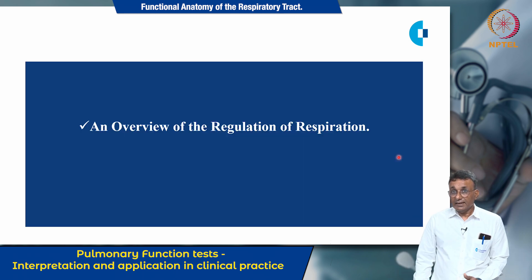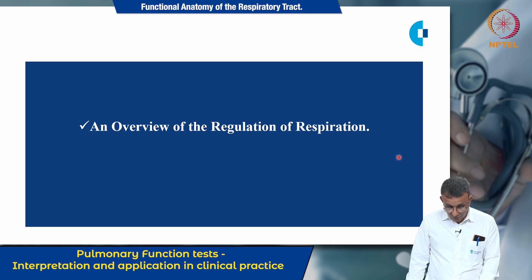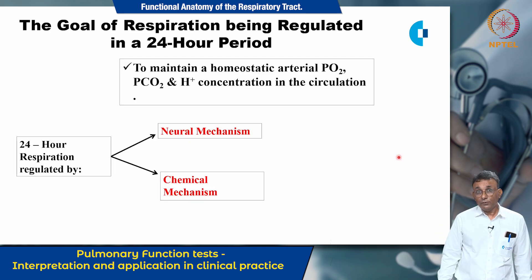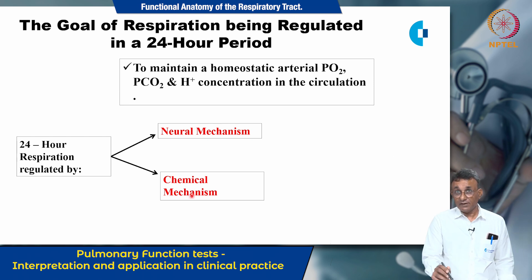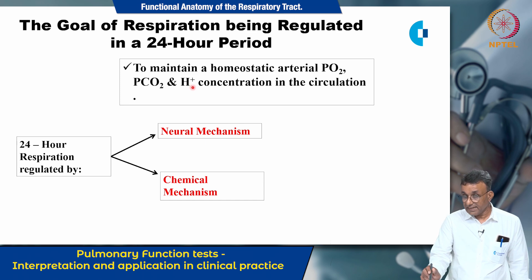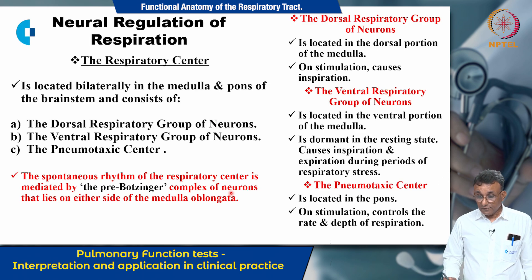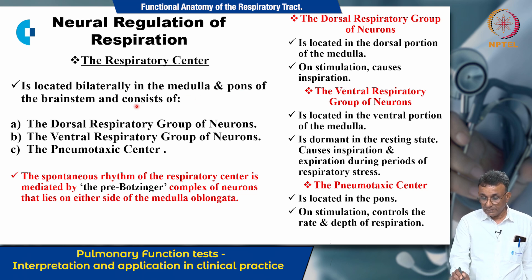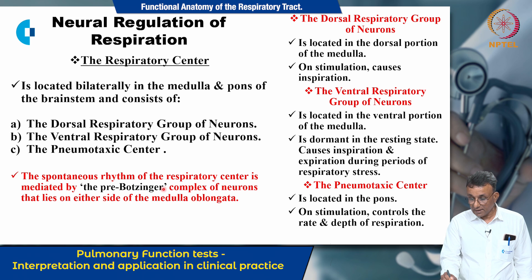The 24-hour respiration in the body is regulated by two means: a neural mechanism and a chemical mechanism. Regulation of respiration serves to maintain a normal partial pressure of oxygen, partial pressure of carbon dioxide, and hydrogen ion concentration in the circulation. The neural regulation of respiration is brought about by the respiratory center, located bilaterally in the medulla and pons of the brainstem, consisting of the dorsal respiratory center, the ventral respiratory center, and the pneumotaxic center. The spontaneous rhythm of the respiratory center is mediated by the pre-Bötzinger complex of neurons lying on either side of the medulla oblongata.